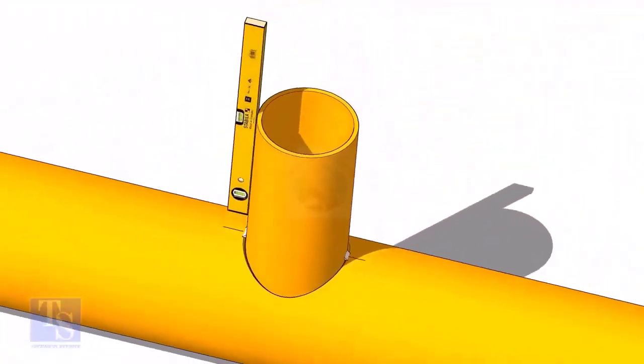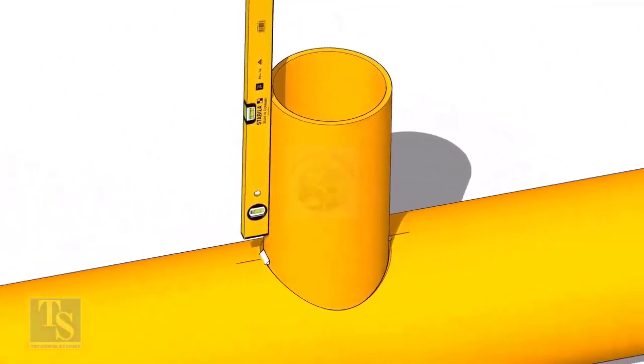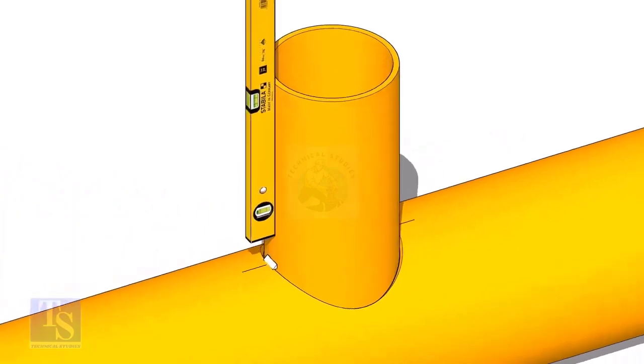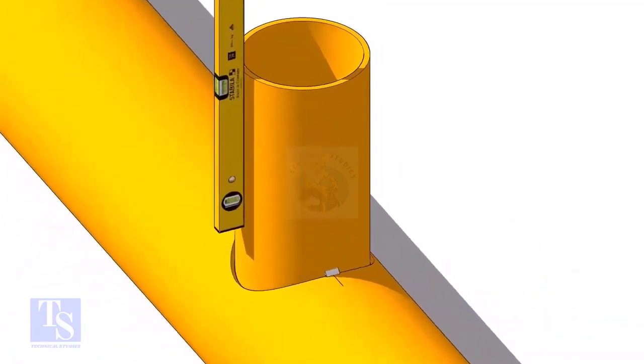Tack weld at one side and check the level of the branch. If the level is correct, tack weld on the other side. Make level of the other face of the branch and tack weld on both sides.